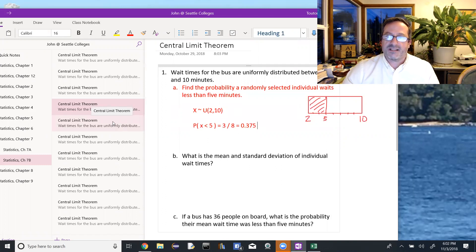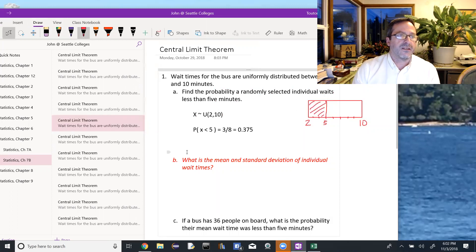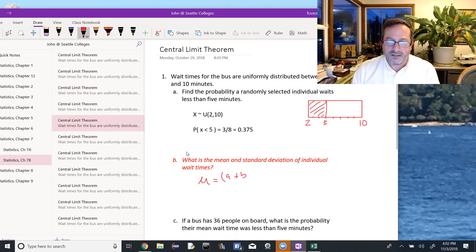Part B is asking for the mean and the standard deviation of the individual wait times. The mean is always found for a uniform distribution as the average of the start and stop values. So it's a plus b over 2, or 2 plus 10 over 2, 6 minutes.